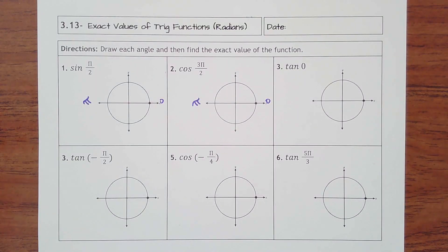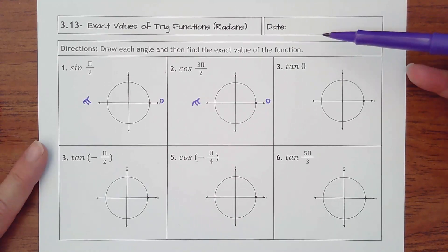So 3.13 is exact values of trig functions, which we've already done. This time it's just in radians instead of degrees. So we do have to draw the angle and then find the exact value.